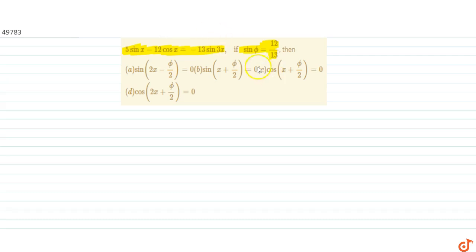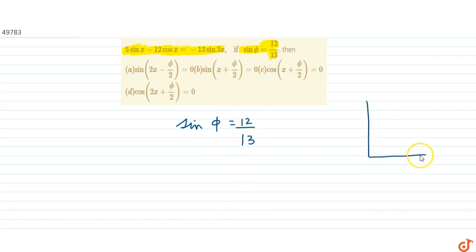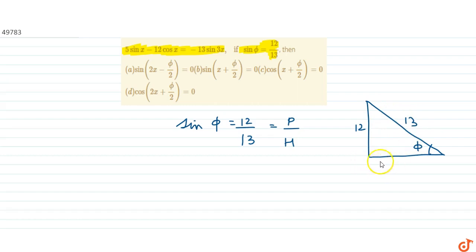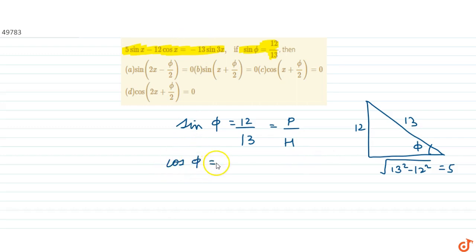First, consider sinφ = 12/13. If we have a right angle triangle with angle φ, then sinφ = perpendicular/hypotenuse, so the perpendicular is 12 and the hypotenuse is 13. Using Pythagoras theorem, the base = √(13² - 12²) = 5.